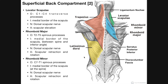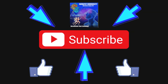Hopefully this video gave you good information on the superficial back compartment, a little bit on the intermediate layer, and how these back muscles — even though they're on the back — can produce movements of the arm through the humerus and the scapula. Please make sure to like this video and subscribe to the channel for future videos and notifications. Thank you very much.